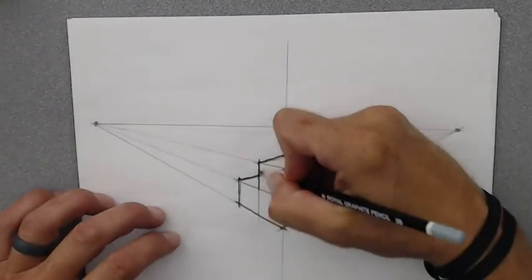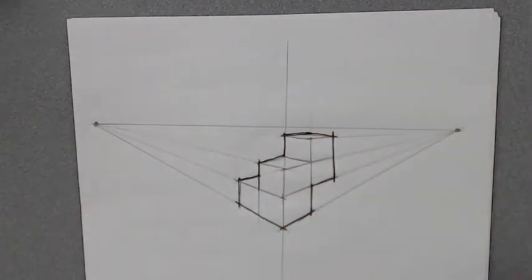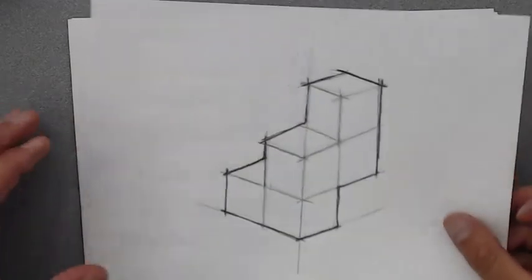I'm going to just darken this up a little bit, just like we did before, to separate that. Now all of a sudden you've got your shape in perspective, which is a much different look than the axonometric, right?